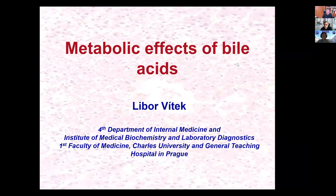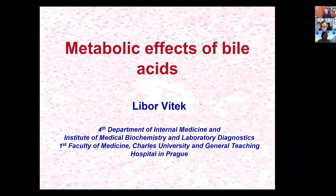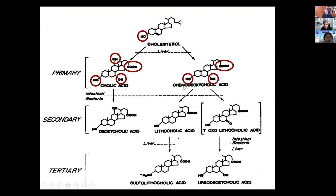My first slide shows a simplified biosynthetic pathway of bile acids. The precursor of bile acids is cholesterol, as everyone knows. We have two primary bile acids: cholic acid and chenodeoxycholic acid. Cholesterol has only one hydroxyl group, whereas cholic acid has three hydroxyl groups and a shortened side chain with a carboxylic group at the end. Chenodeoxycholic acid, the second primary bile acid, is lacking a hydroxyl at position C12.